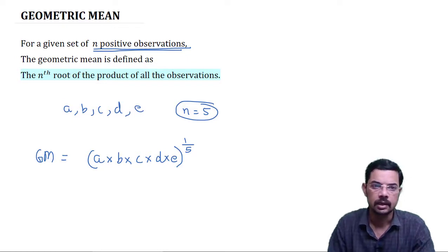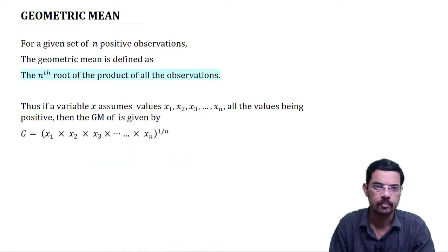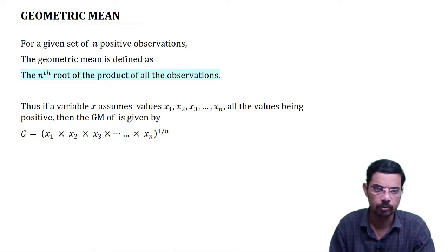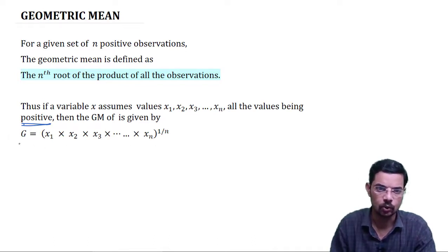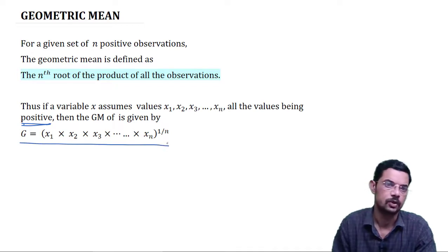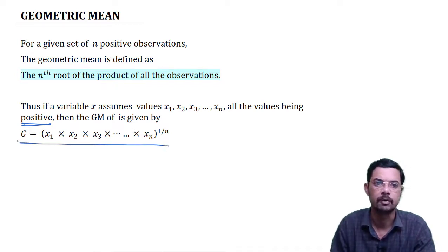In general, for n observations x1, x2, x3 up to xn, all values being positive, the geometric mean denoted by GM or G is given as the product of all observations raised to 1 by n. This is the definition and formula to find GM of n observations x1, x2, x3 up to xn.